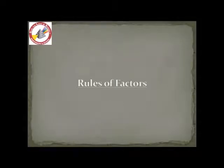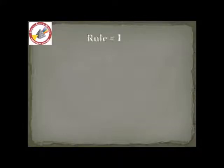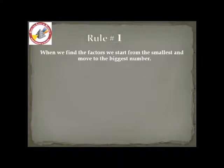There are certain rules of factor. Rule number 1 is, when we find the factor, we start from the smallest and move to the biggest number. For example, we have to find the factor of number 44.